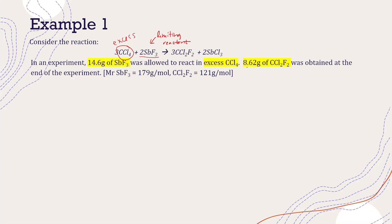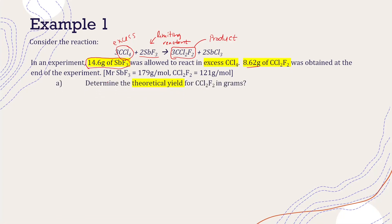At the end of the experiment, 8.62 grams of CCl2F2 was obtained. This is the product — CCl2F2 and SbCl3 are both products. So we want to know: if you have this much SbF3, how much CCl2F2 will you theoretically produce? Note that 8.62 grams is the actual yield — data obtained from an experiment is always actual yield. What we are looking for is the theoretical yield, which comes from calculation.